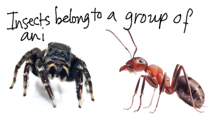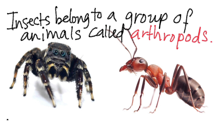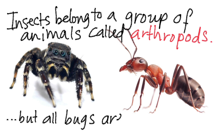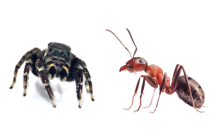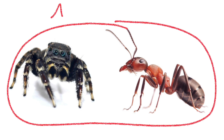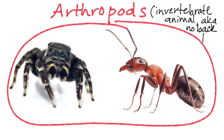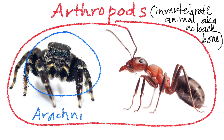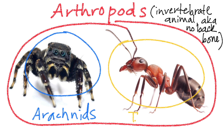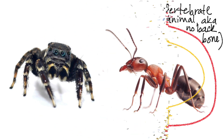Insects belong to a group of animals called arthropods, but all bugs are not the same. Both the spider and the ant belong to arthropods, which basically means they're invertebrate animals, or they don't have a backbone. However, the spider belongs to the arachnid category, and the ant belongs to the insect.